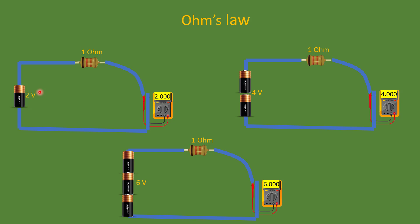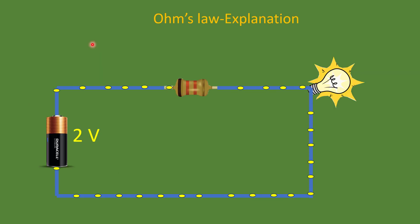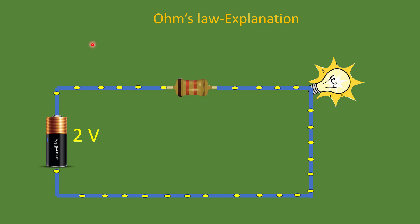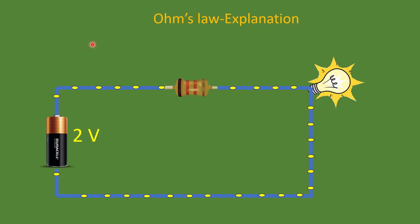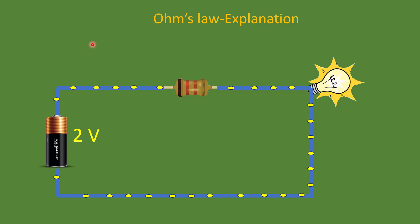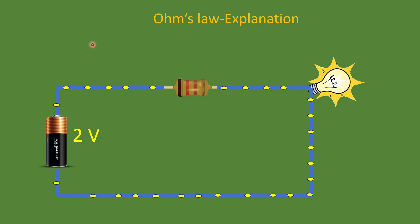The law says current is directly proportional to the voltage across its ends at constant temperature. If you increase the voltage from 2 volts to 6 volts, current also increases. We know current is a flow of electrons, and voltage is the pushing force — it pushes the electrons to flow in one direction. If voltage is not there, electrons still flow, but in random directions, so it has no practical use. If we apply a voltage, electrons move in a specified direction.